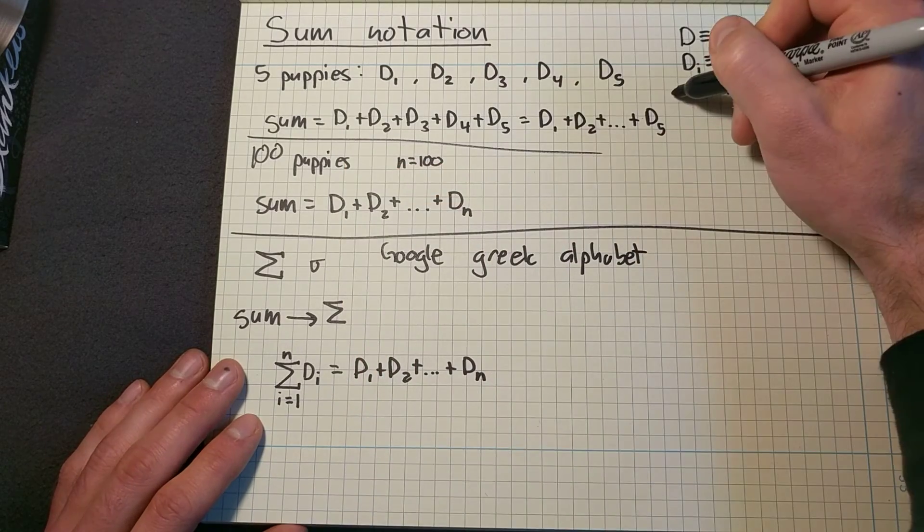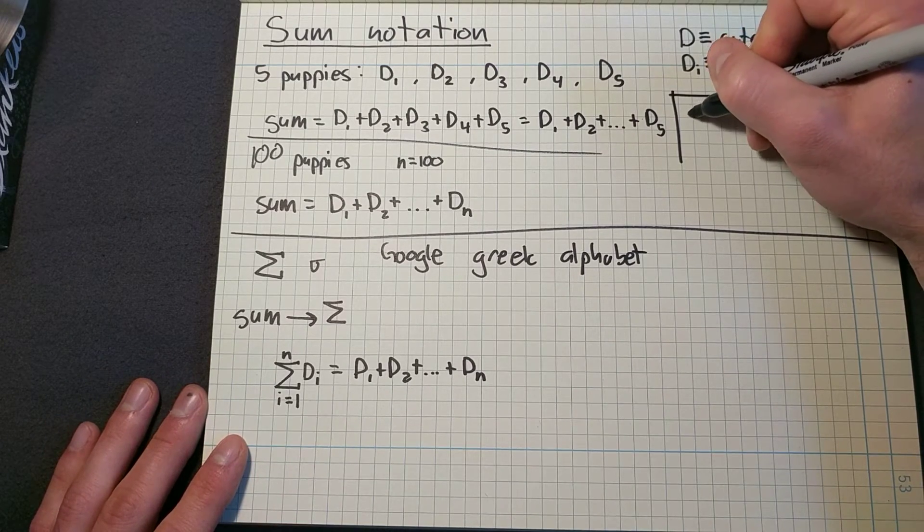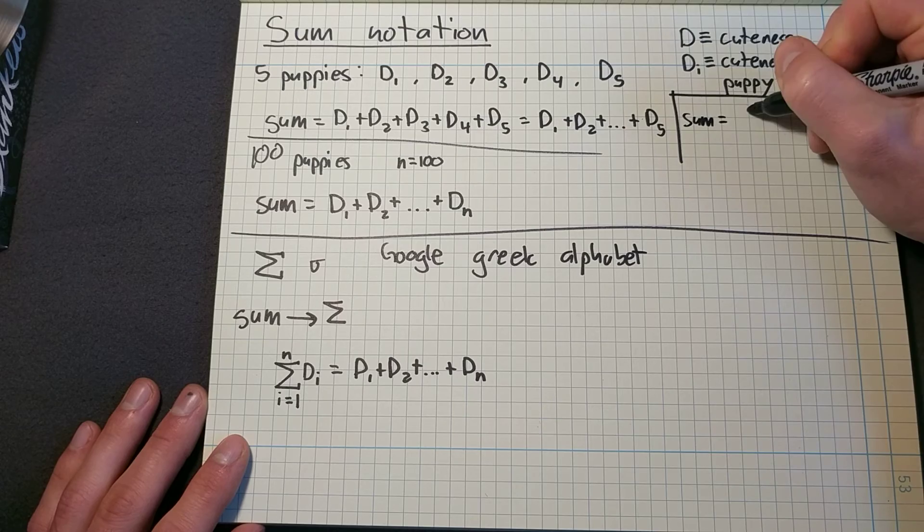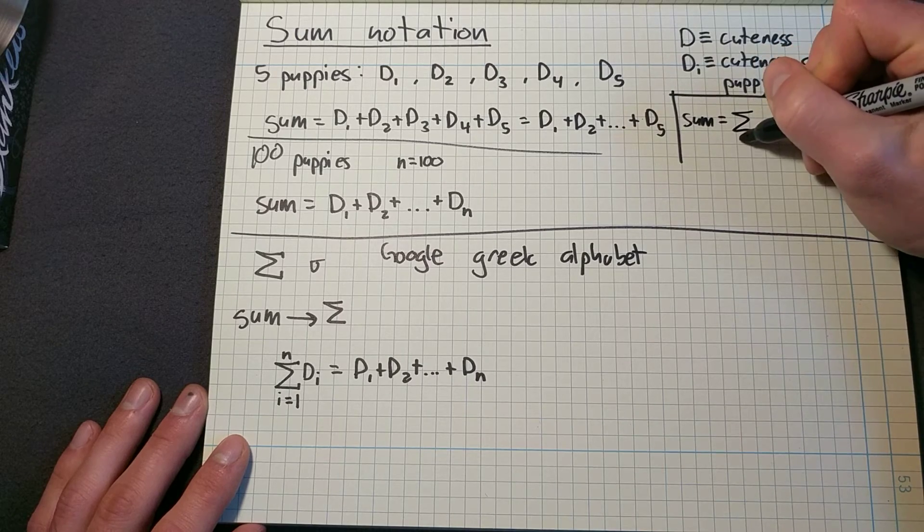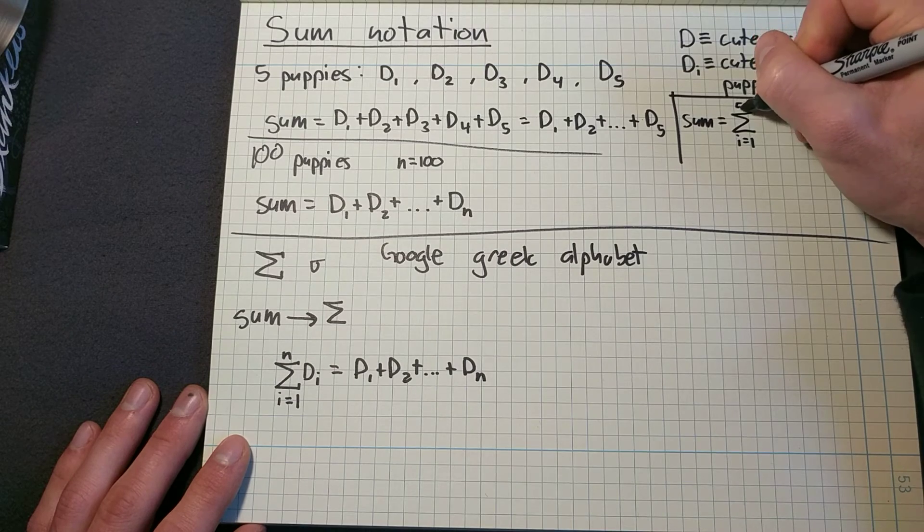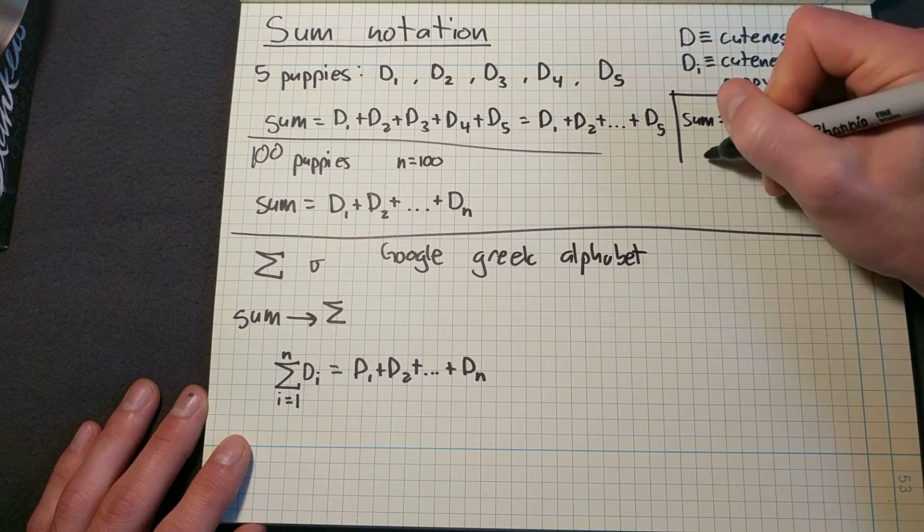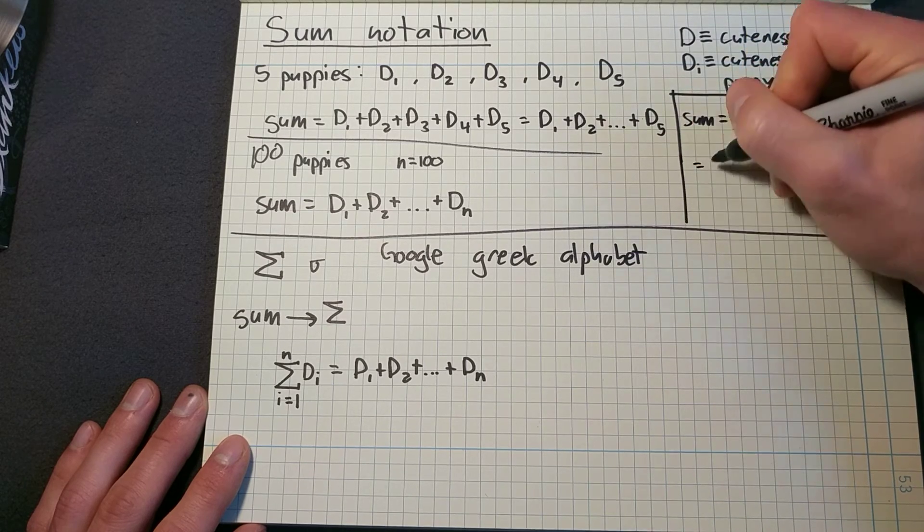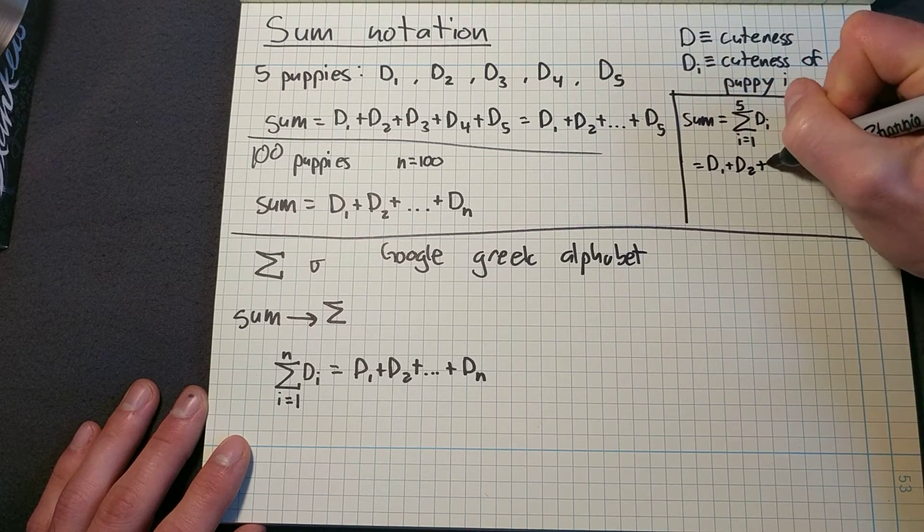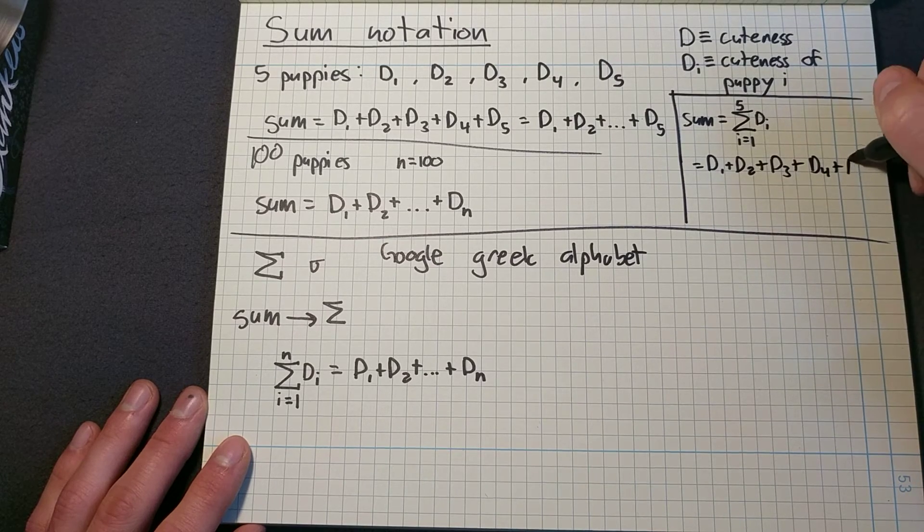For the first example we have, the sum would be equal to the sum from one to five of D I, which equals D one plus D two plus D three plus D four plus D five.